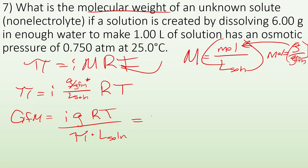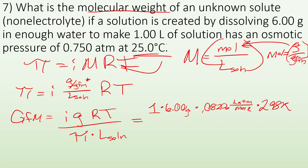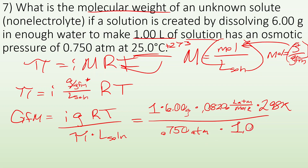Now plugging in: i = 1 (non-electrolyte), grams = 6.00 g, R = 0.08206 L·atm/mol·K, temperature = 298 K (25°C + 273), osmotic pressure = 0.750 atm, and liters of solution = 1. When I plug and chug, my final answer is 196 grams per mole. And if you look at the units you're left with, it works out — grams divided by moles.